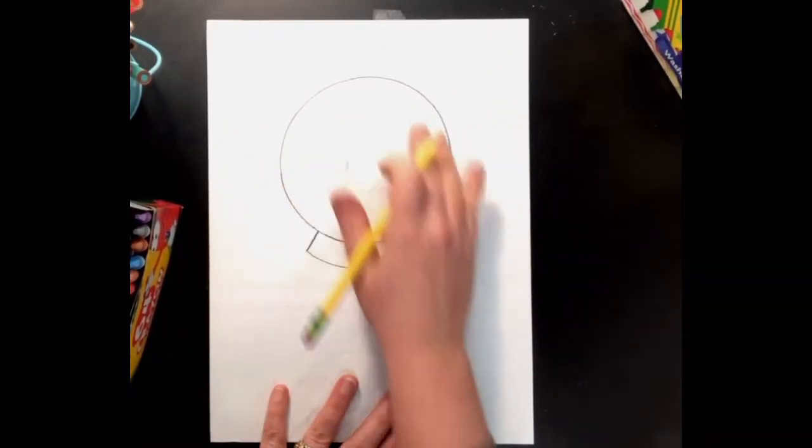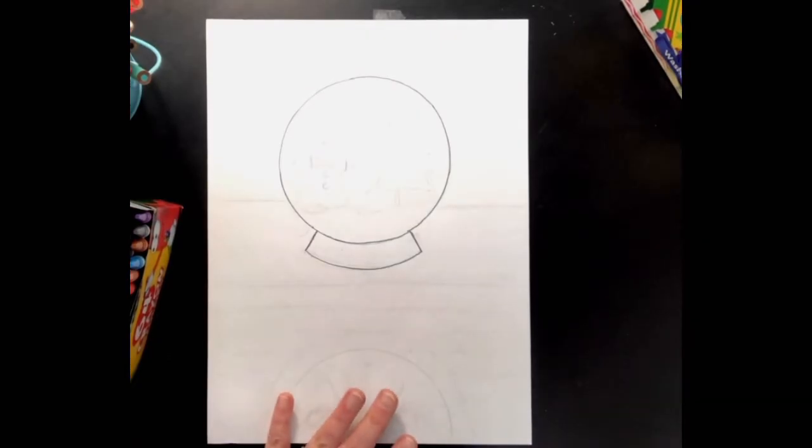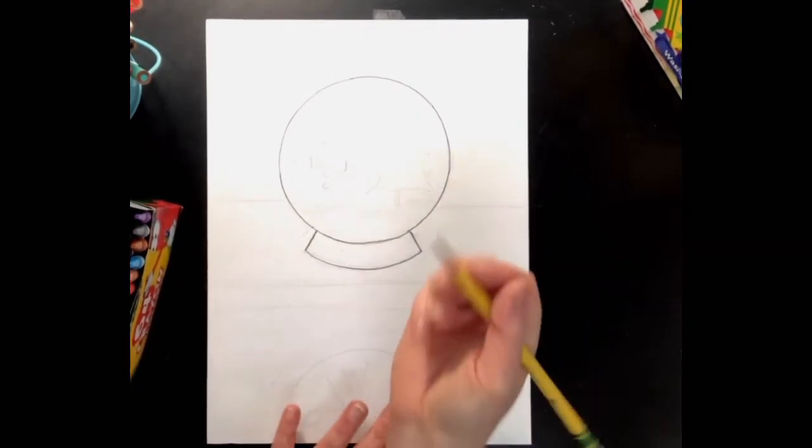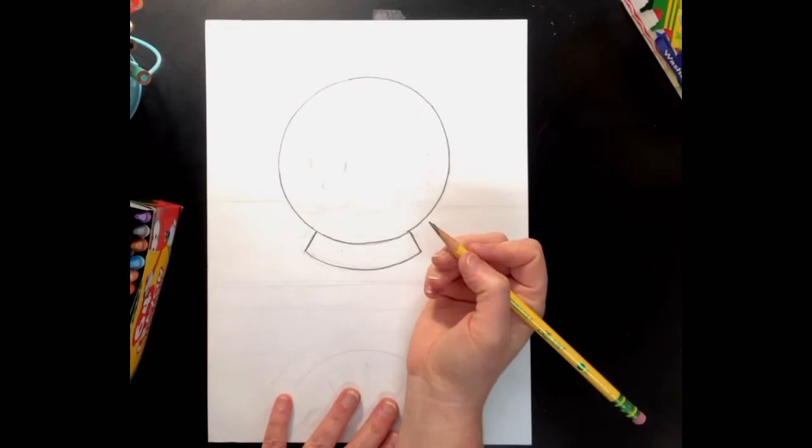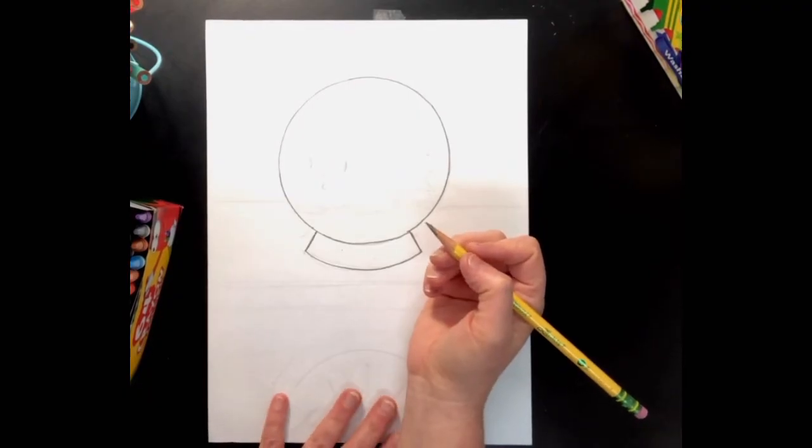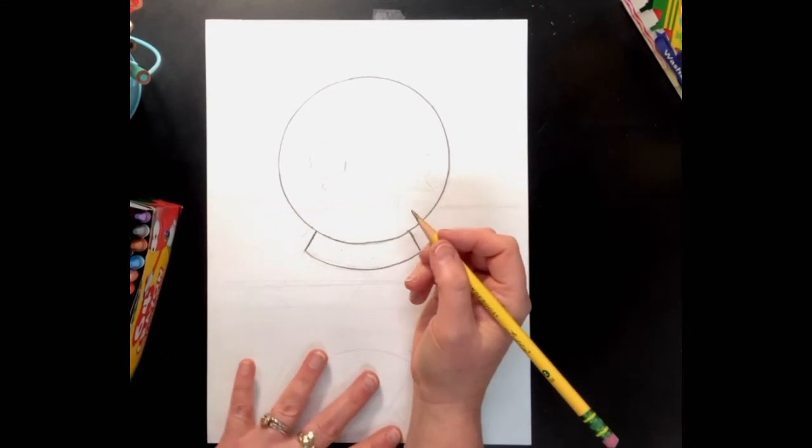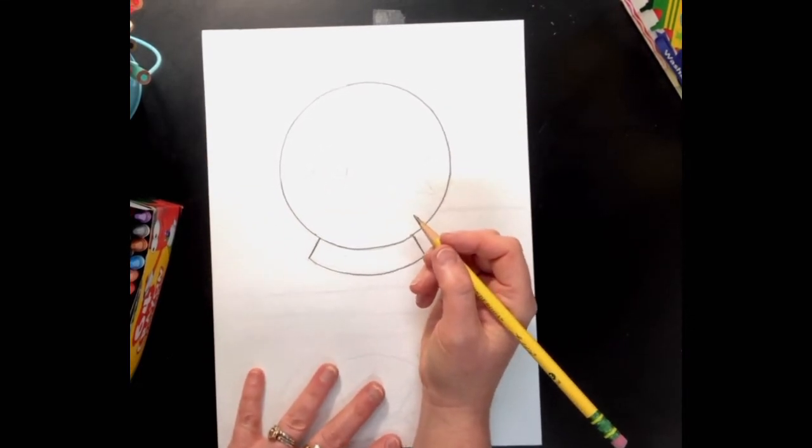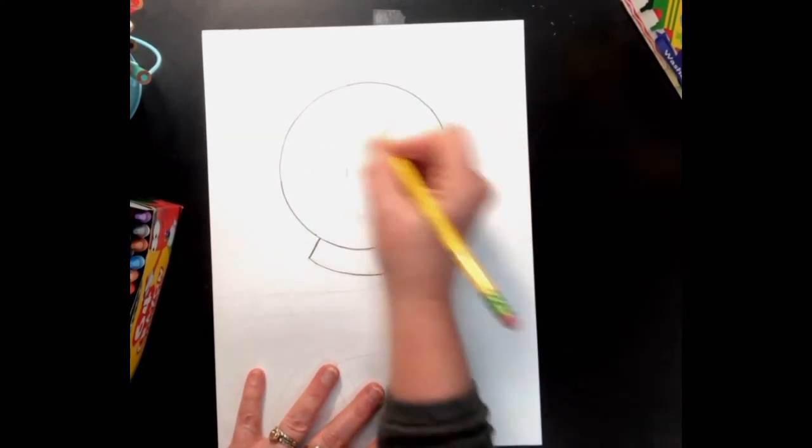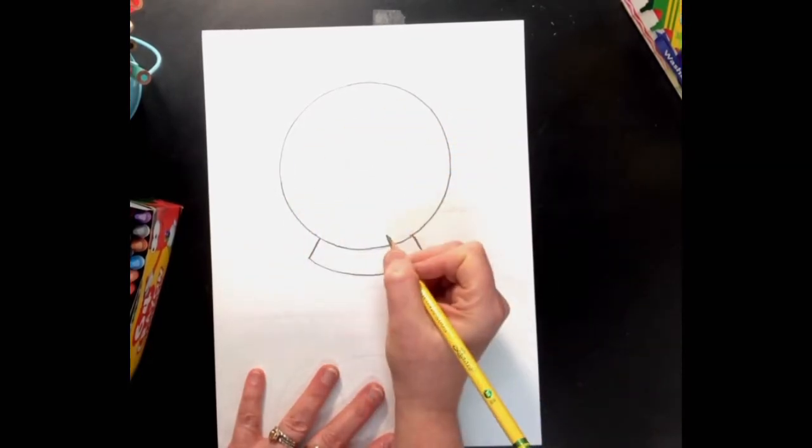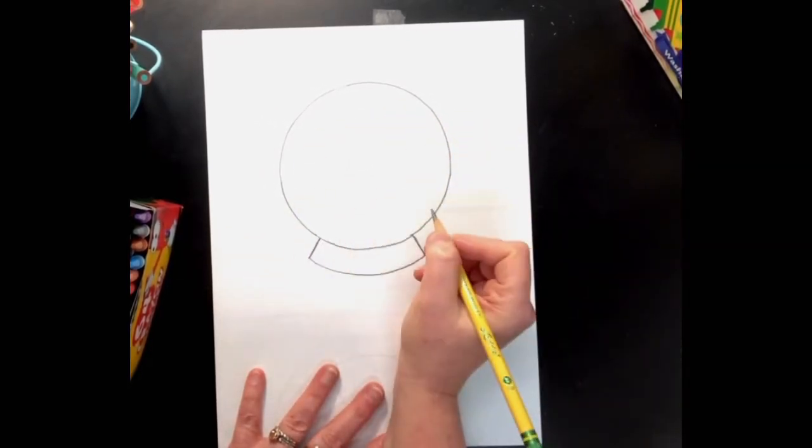After I do that, now I'm ready to think about all the details I want to add inside my snow globe. Now we saw examples of snowmen or Christmas trees or winter trees or penguins or even like a little log cabin. You can draw thinking about what shapes they are and you can add anything you want in this space.